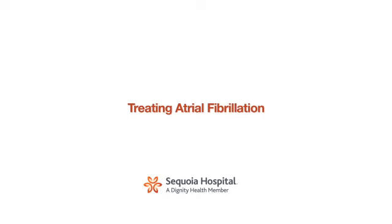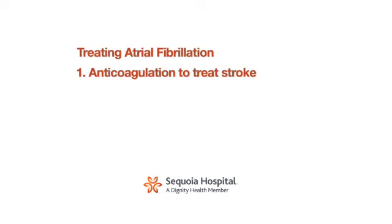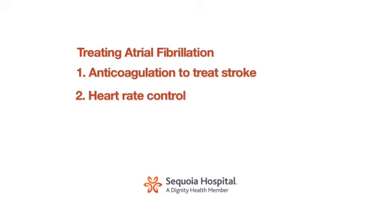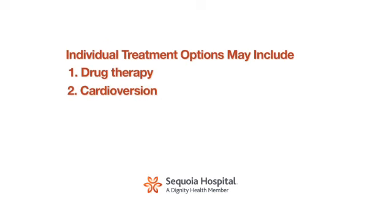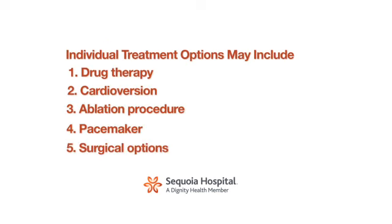When we think of treating atrial fibrillation, we break it down into three parts. Anticoagulation to treat stroke is the number one thing we need to think about. Number two is rate control, controlling how fast the heart goes. And number three is rhythm control, trying to get a patient out of atrial fibrillation. The most important part of treating atrial fibrillation is that we will individualize it for each and every patient. Regardless of whether you're a candidate for ablation, or what your options are, we're going to work hard to find a solution that's best for you to make you feel better and improve your quality of life.